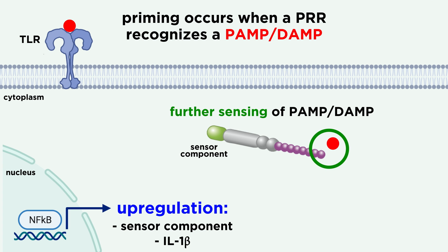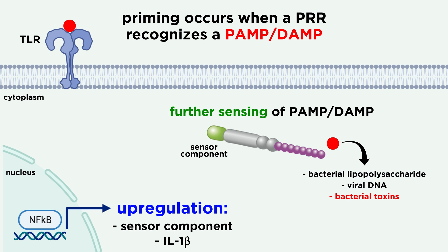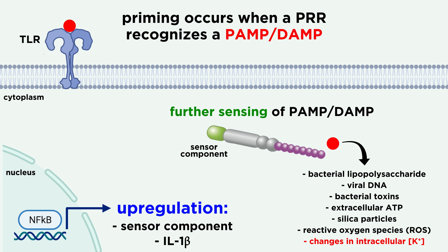Remember that the inflammasome sensor doesn't necessarily need to bind directly to these signals. Some of these signals include bacterial lipopolysaccharide, viral DNA, bacterial toxins, extracellular ATP, silica particles, reactive oxygen species, and changes in intracellular potassium levels.